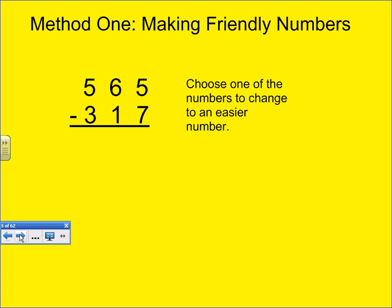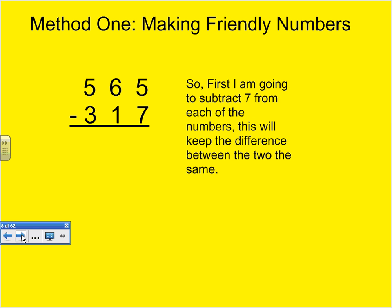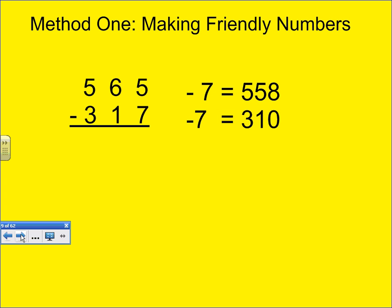Choose one of the numbers to change to an easier number. I'm going to choose to change 317 to a more friendly number. I'm going to get it to 300 so I can subtract 300 from the top number. So, first I'm going to subtract 7 from each of the numbers. This will keep the difference between the two the same. 565 subtract 7 is 558. 317 subtract 7 is 310.